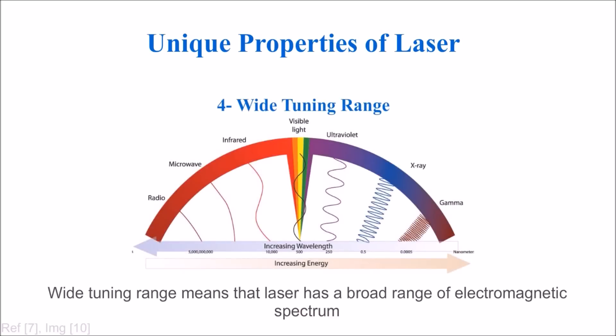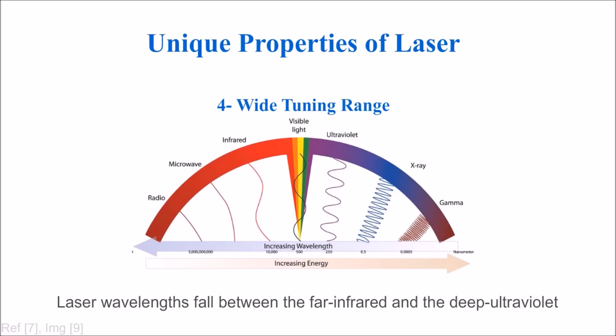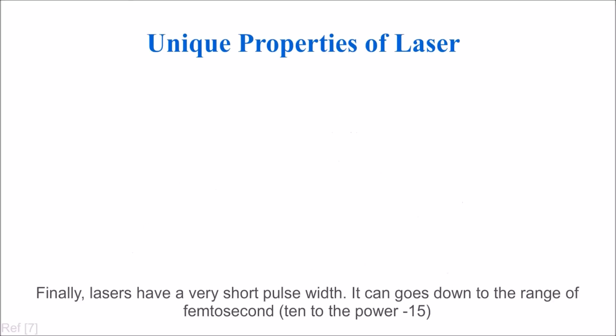Wide tuning range means the laser has a broad range of electromagnetic spectrum. Laser wavelengths fall between the far infrared and the deep ultraviolet. Finally, lasers have a very short pulse width. It can go down to the range of femtoseconds, which is 10 to the power of minus 15.